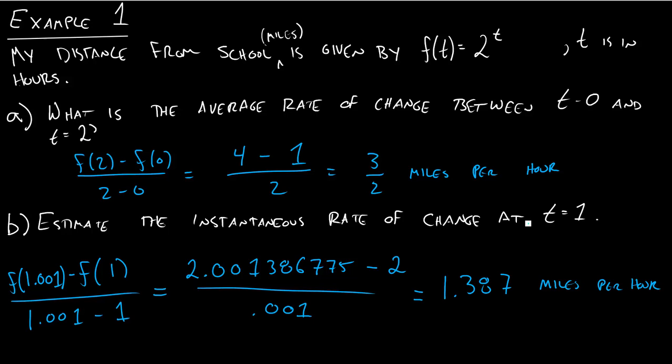So this is an estimate of how fast I was going, what my speedometer was at t equals 1, where this is an average of what my speedometer read between t equals 0 and t equals 2.